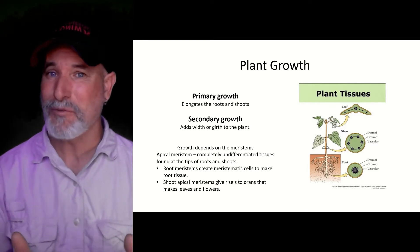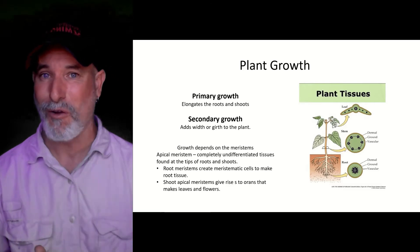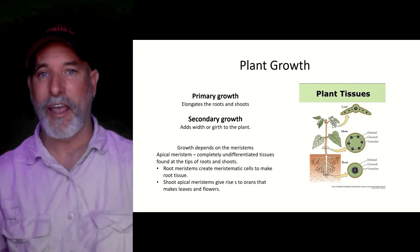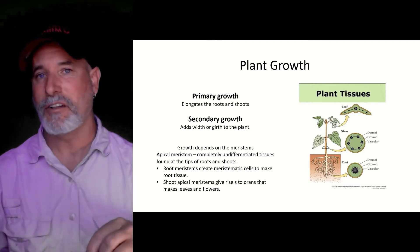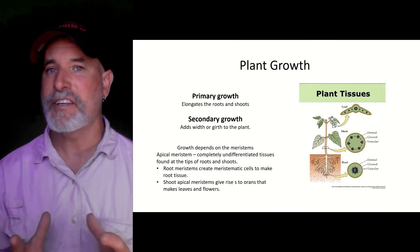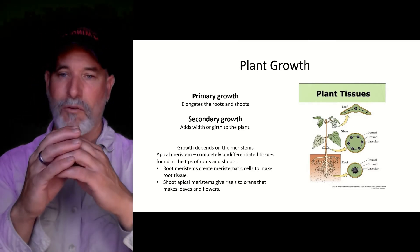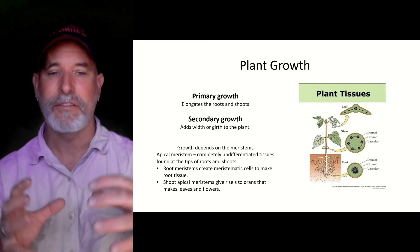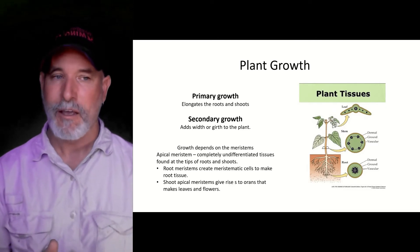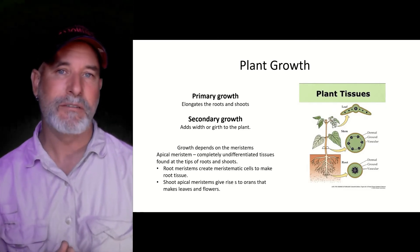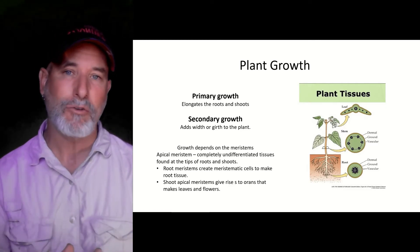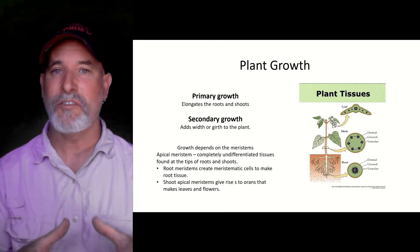Meristems are important for plant growth. Plants grow tall — that's primary growth; you've watched a plant elongate longer and longer, that's primary growth. Then secondary growth is like watching a tree get thicker and thicker. Growth depends on our meristems. The apical meristem is at the tip of a shoot or a root, and then you have a lateral meristem, which is on the inside of the plant and is responsible for secondary growth.